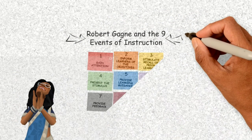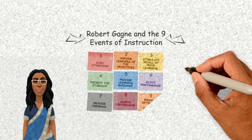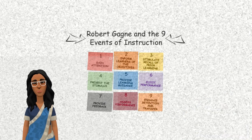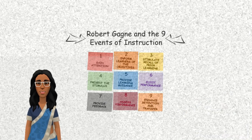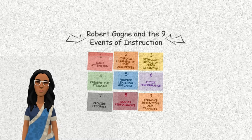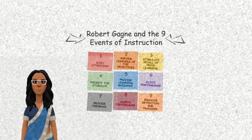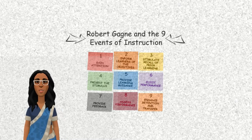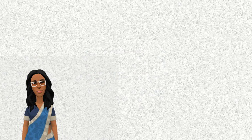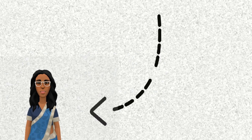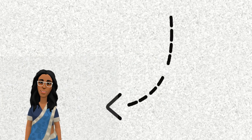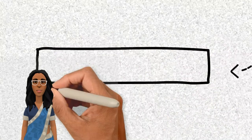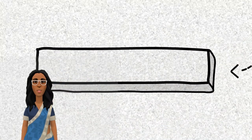Let's move on to the nine events of instruction, which Gagné defined as any set of events external to the learner that are designed to support the internal processing of learning. Gagné's theory is widely used. According to Gagné, learning occurs in a series of learning events, and each event must be accomplished before the next in order for learning to take place.